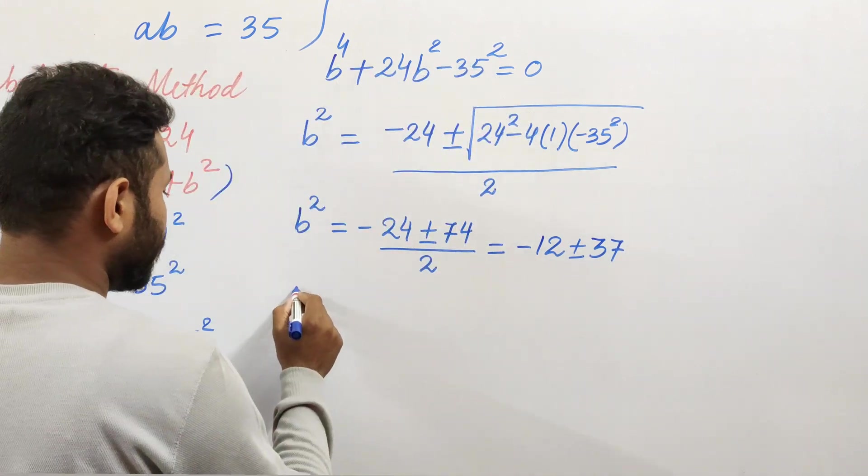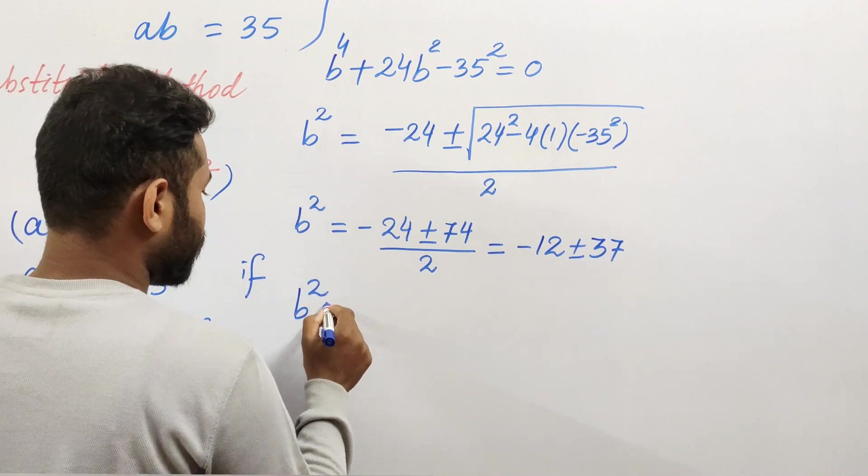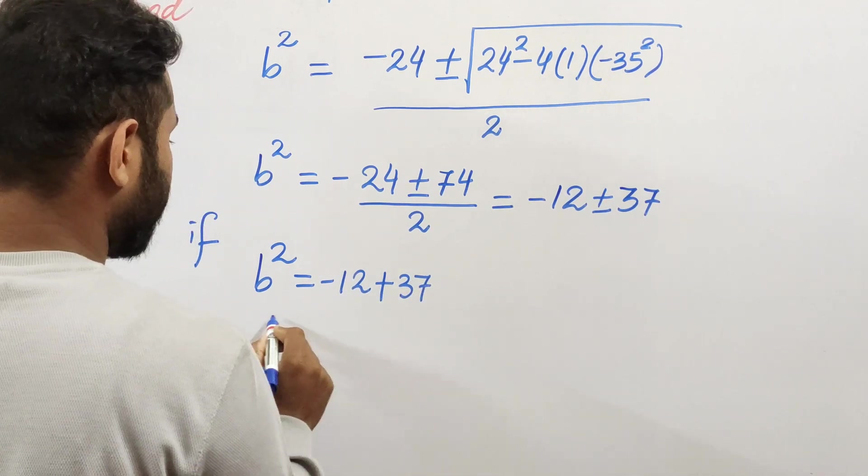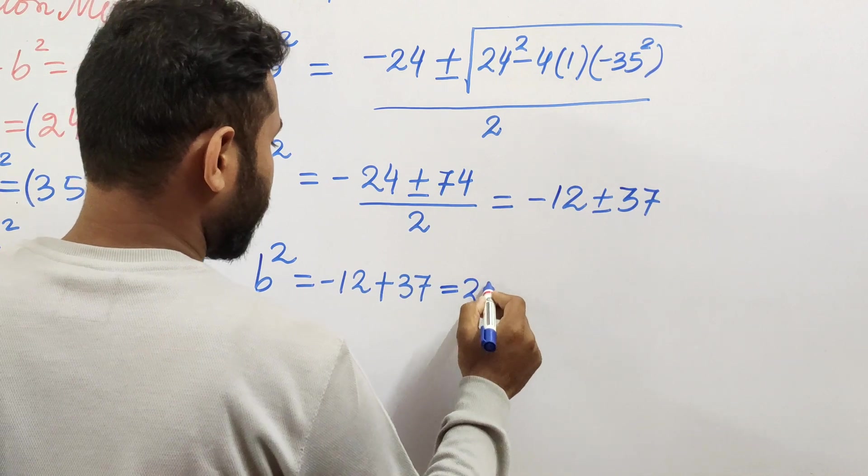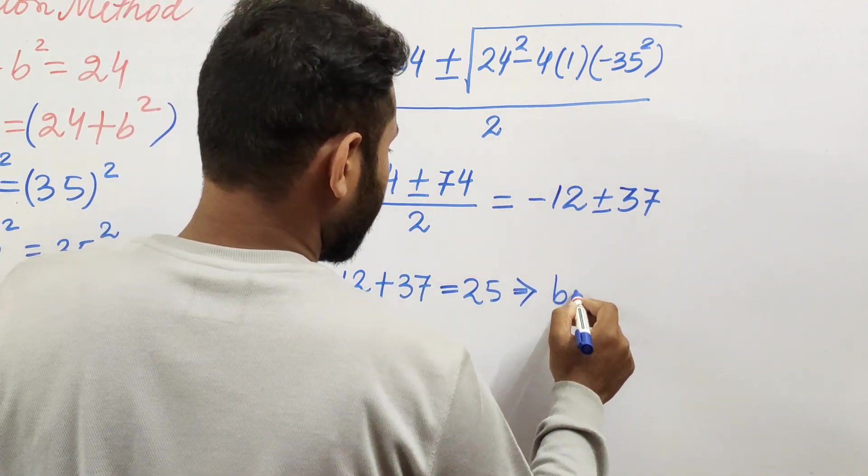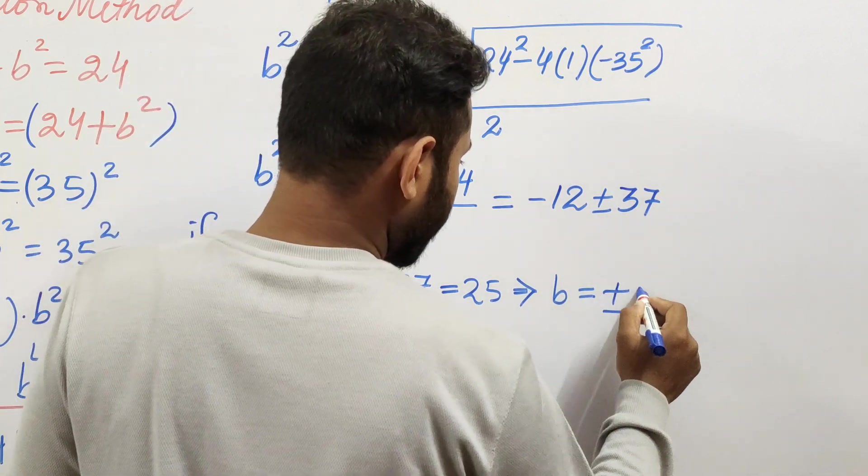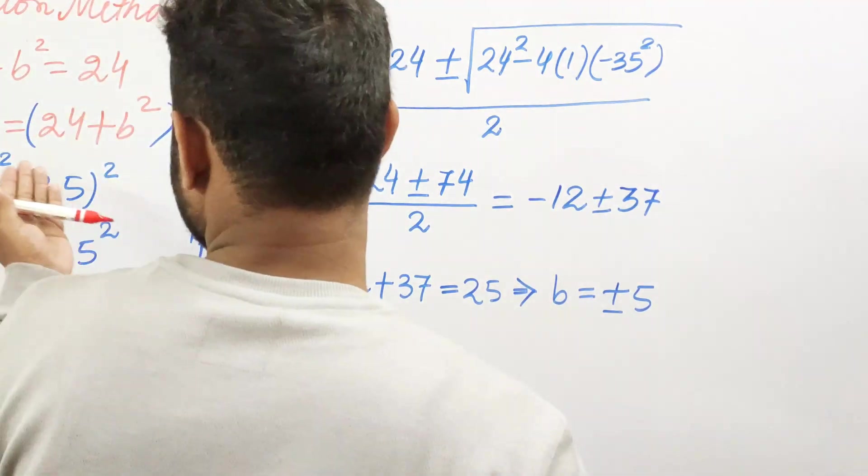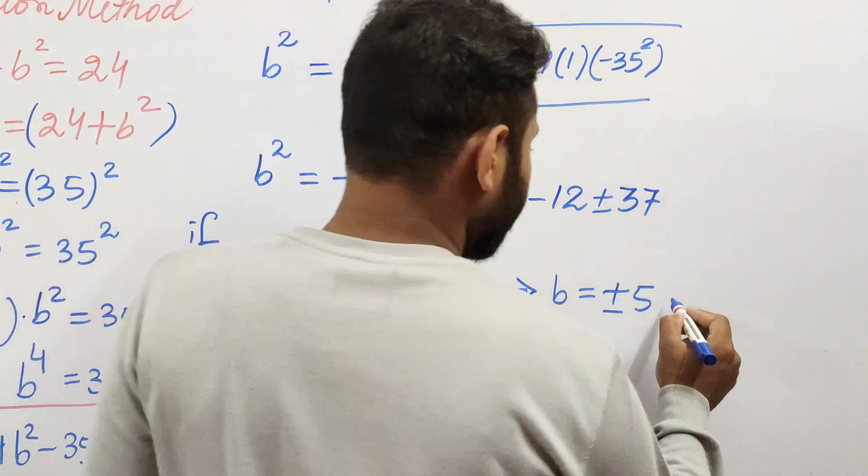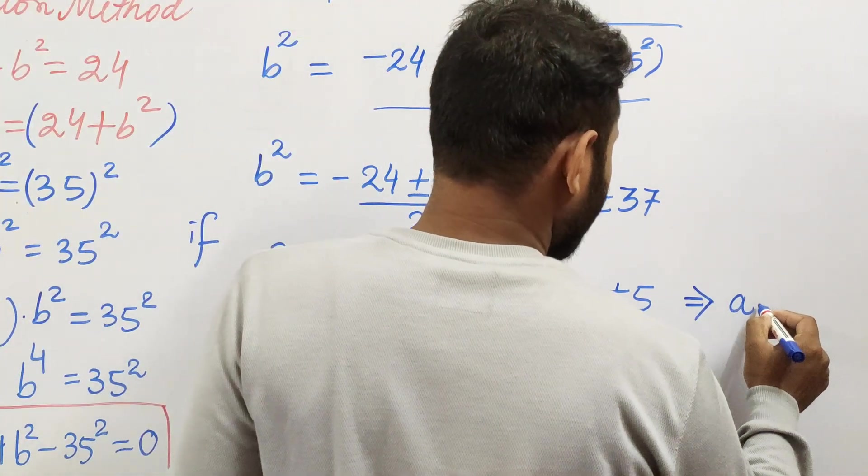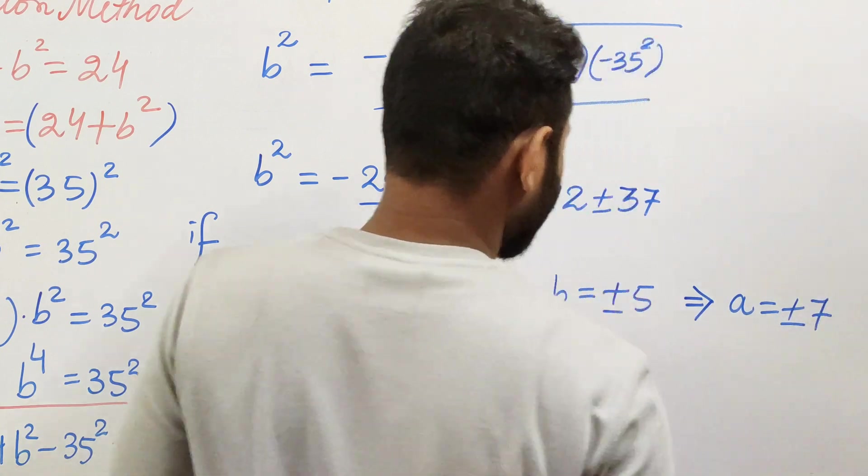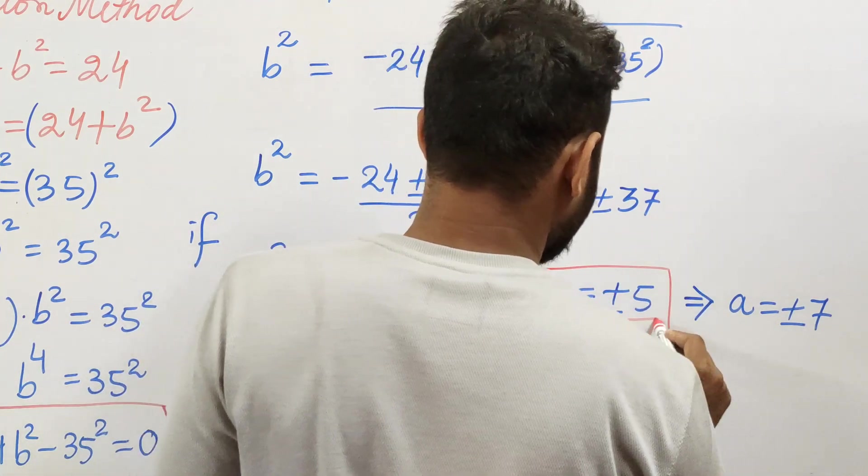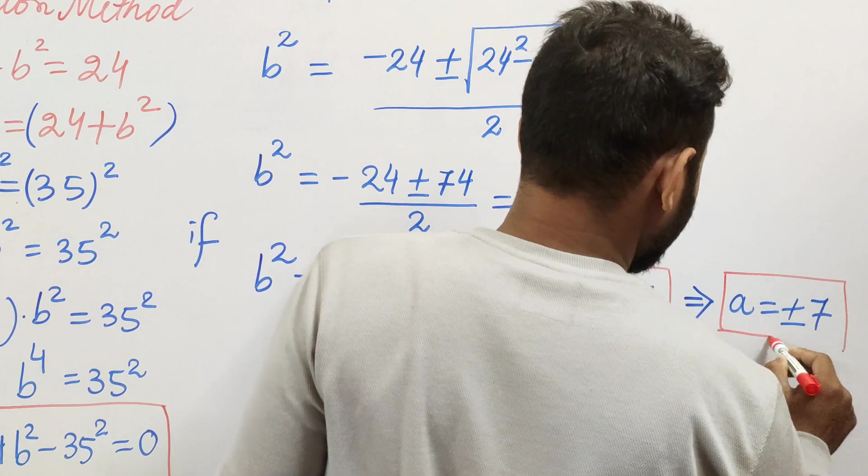So we have two roots. If b² = -12 + 37 = 25, then b will be ±5. If b is ±5, then clearly a is going to be ±7. So here we have our first pair of solutions.